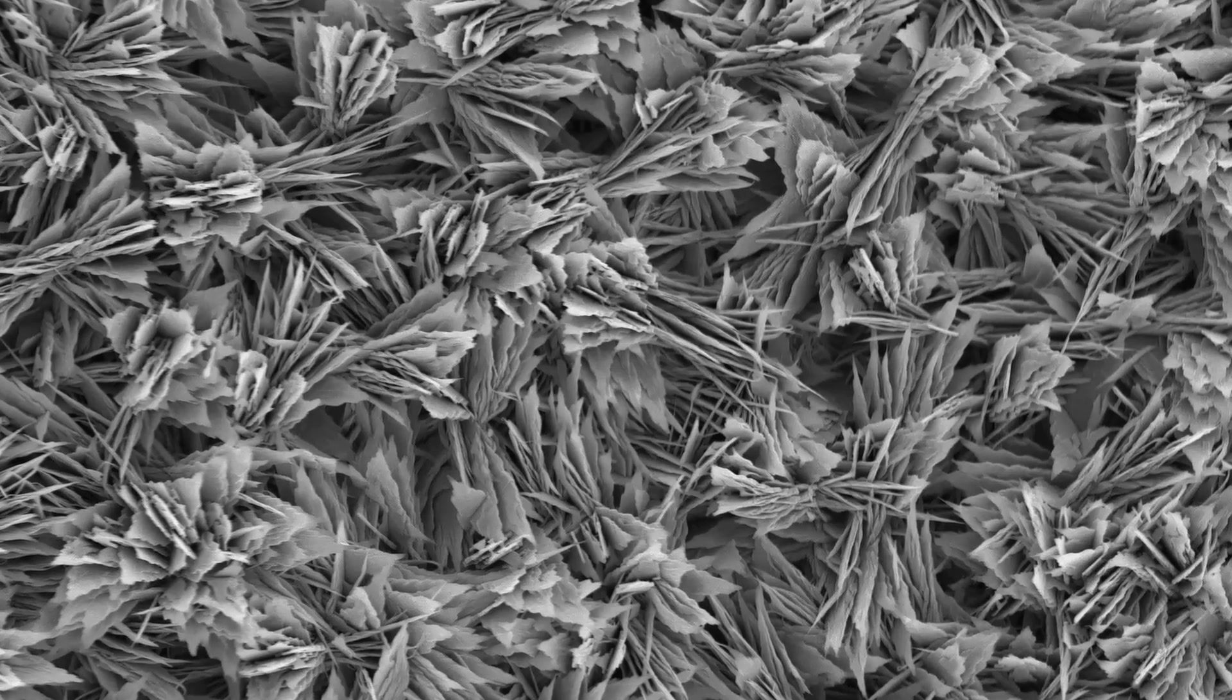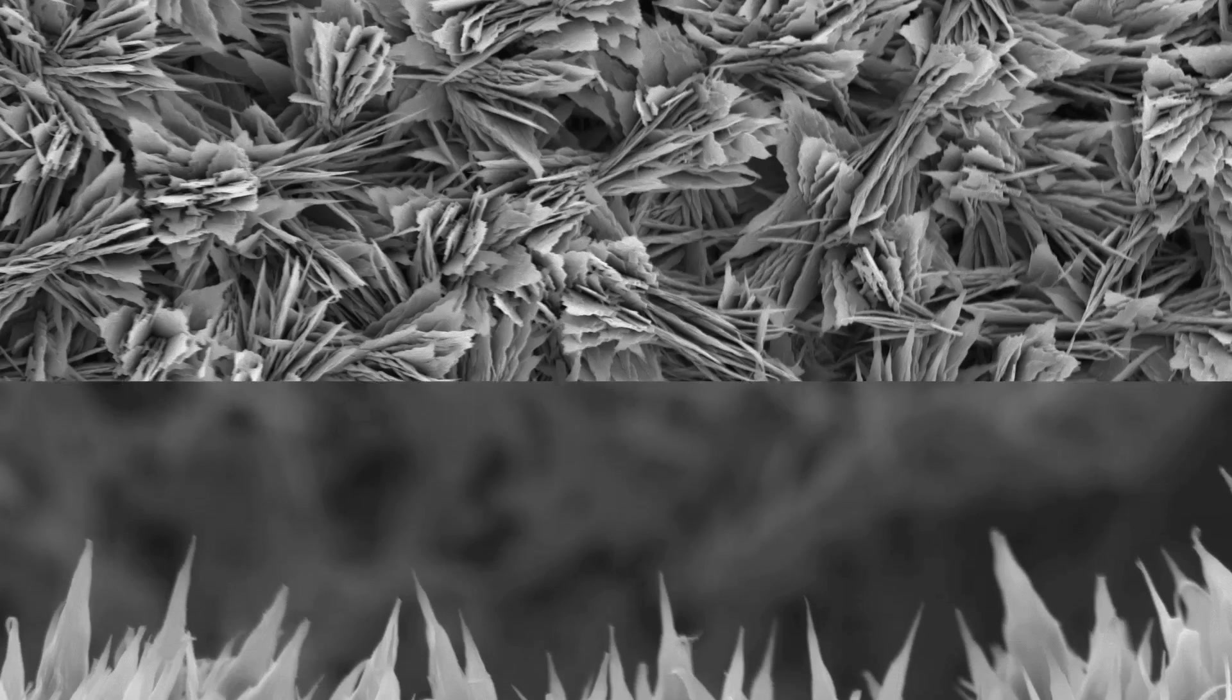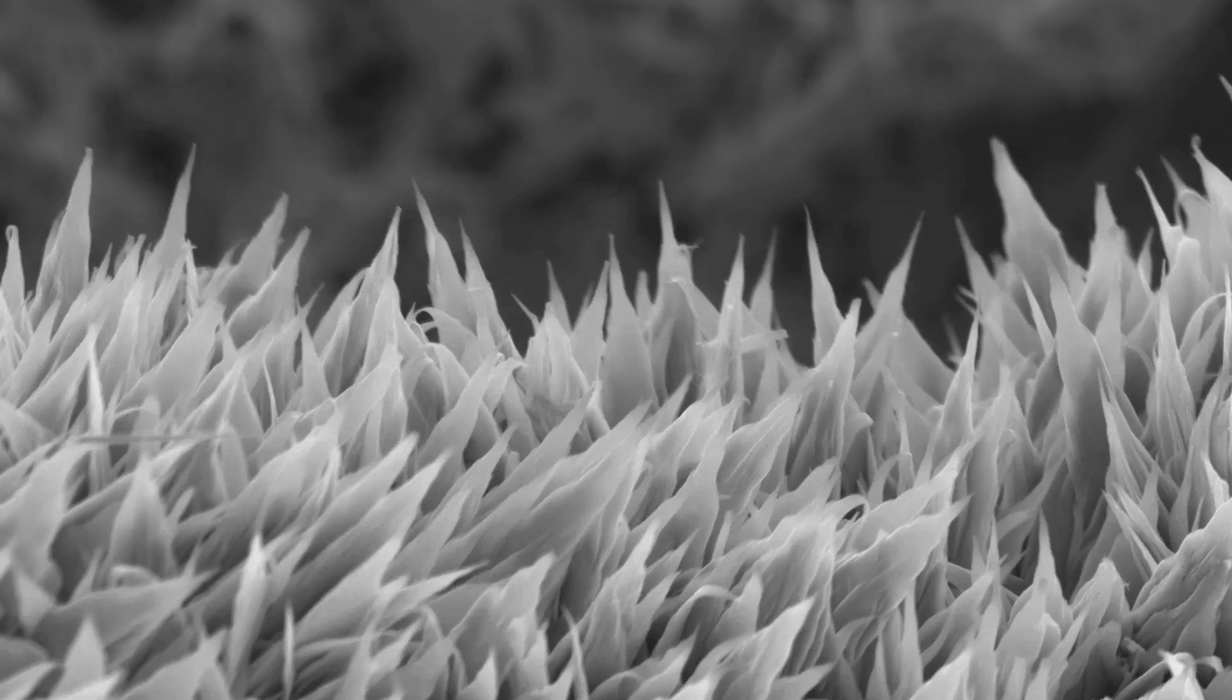After the leaf-like pattern is created, a hydrophobic coating is applied using a solution that bonds itself to the pattern's surface without significantly altering its shape.